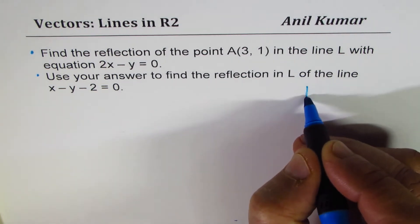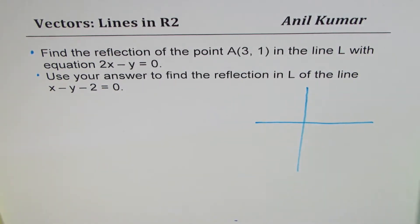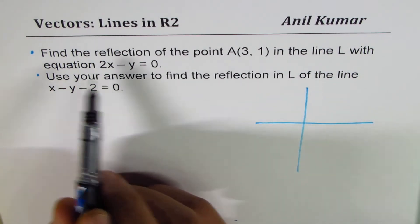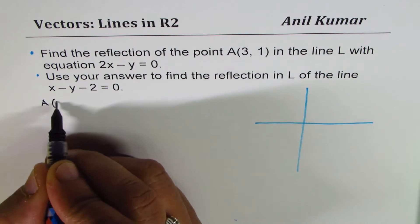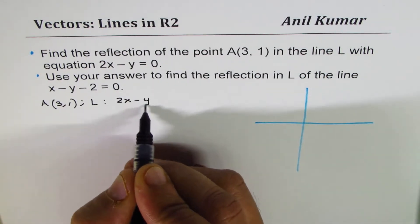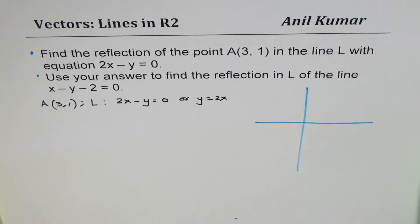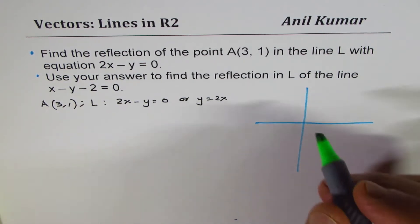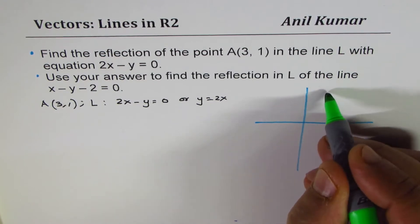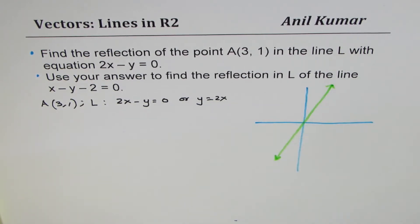I would prefer to use proper graph paper for this kind of problem. However, I work with very rough sketches, so let me continue in my own way. We are given point A as (3,1). We have to reflect it on line L whose equation is 2x minus y equals to 0, which you could also write as y equals to 2x. That makes things very simple. y equals to 2x will be a straight line going through the origin with slope 2.